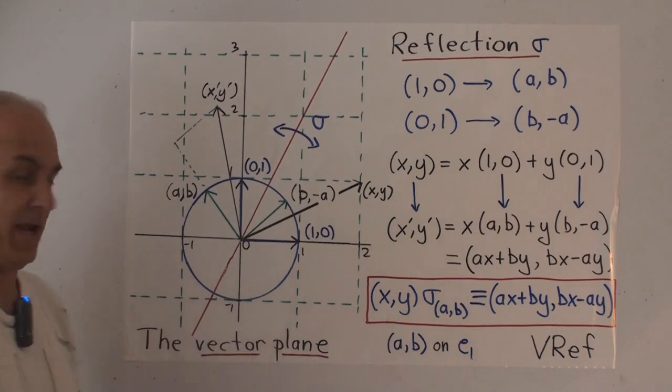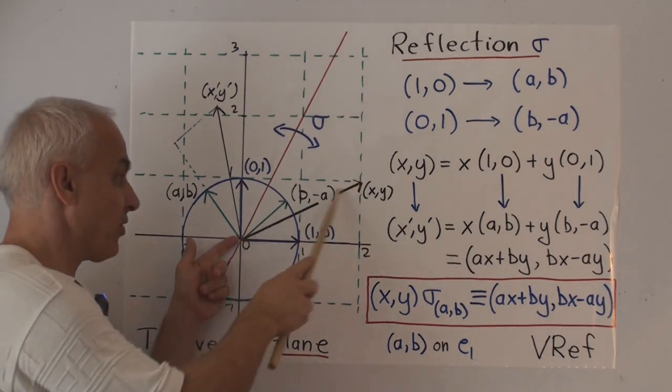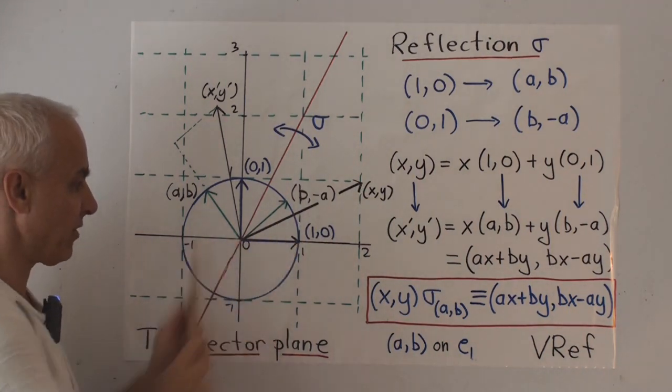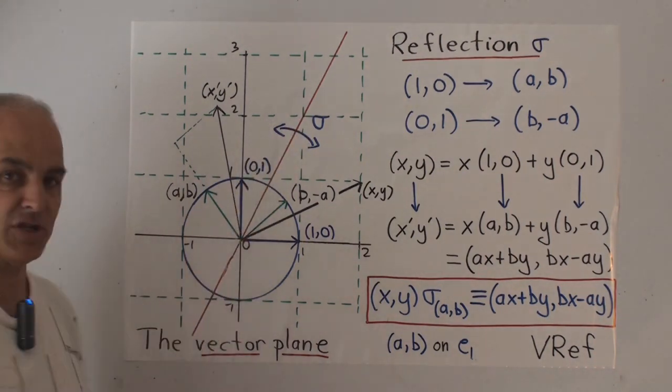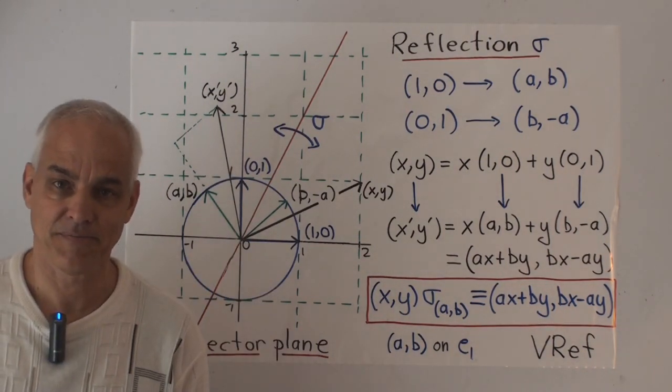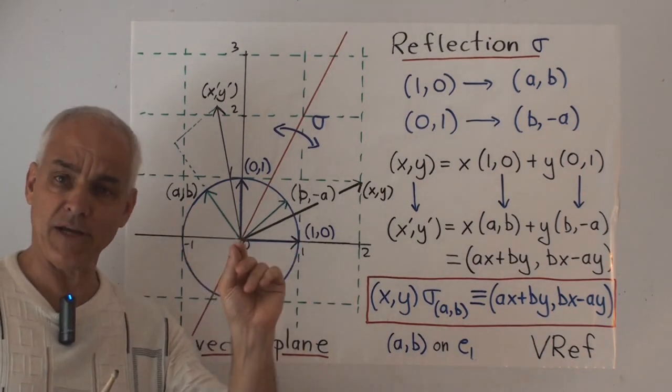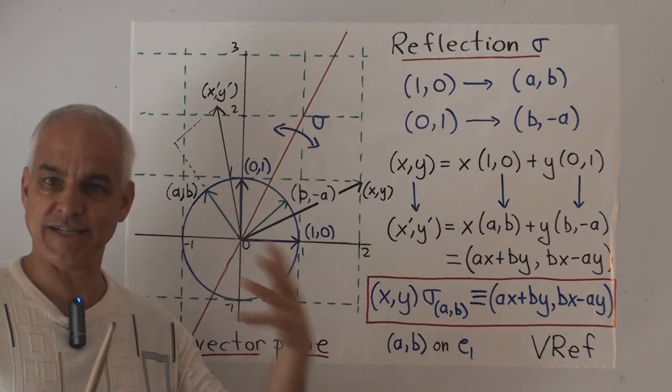So here's our picture of the vector plane. A position in this vector plane denotes not a point but a vector. So this position is encoding the vector that's emanating from the origin to that position. So here we have the vector 1,0. Here the vector 0,1. And we're looking at a particular reflection, the reflection in this red line here. We're calling that reflection sigma. We want to understand precisely what this reflection does in order to define it. So we're using our geometrical intuition to get an algebraic formula. And then that algebraic formula is what we're going to use to define what we actually mean by the reflection. This is all preliminary to setting up the definition.